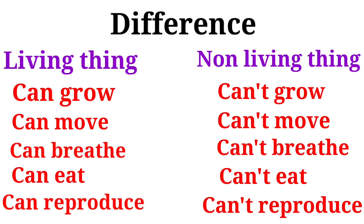Living thing and non-living thing difference. Living things can grow, move, breathe, eat and reproduce. Non-living things cannot grow, cannot move, cannot breathe, cannot eat and cannot reproduce.